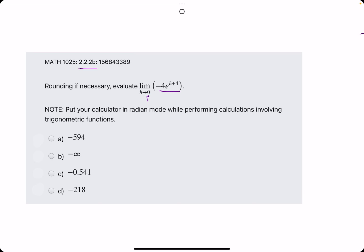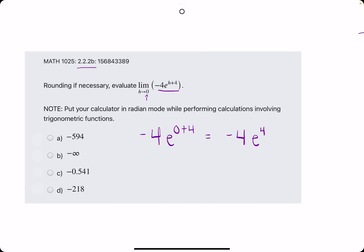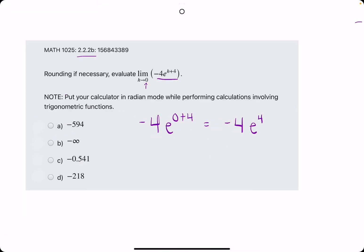First thing we'll do is negative four e to the zero plus four, which simplifies to negative four e to the fourth. So this should be some numerical value we just need to find what that is.